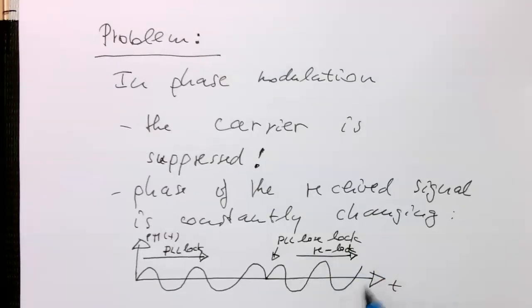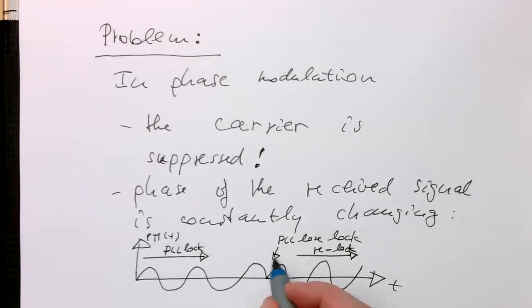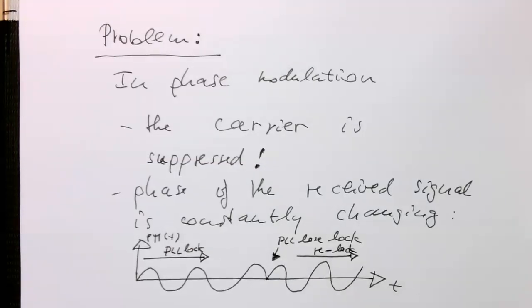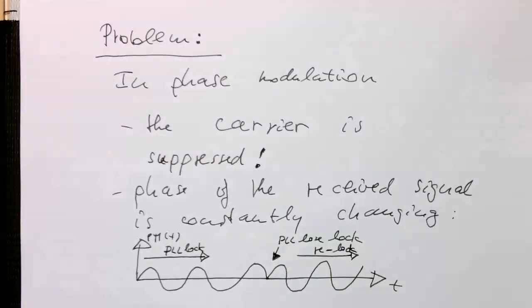So this means that essentially we are always then demodulating in phase information. So we cannot directly use the PLL as it is because the output would always be locked.